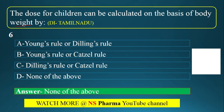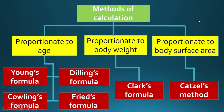We will see how children's dose is calculated. Based on age, there are four formulas: Young's formula, Dilling's formula, Cowling's formula, and Fried's formula. These four formulas are used to calculate the pediatric dose based on age. You can use any of these formulas.